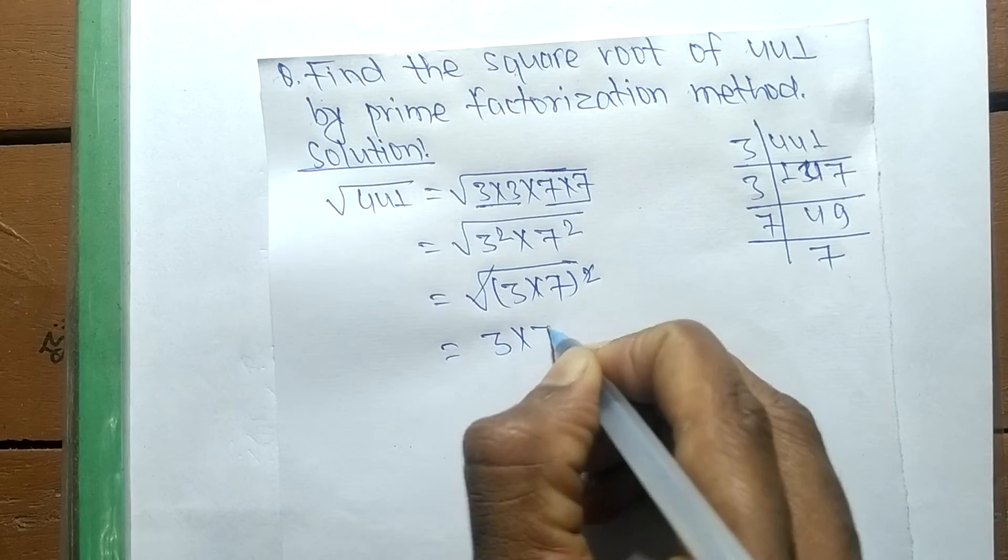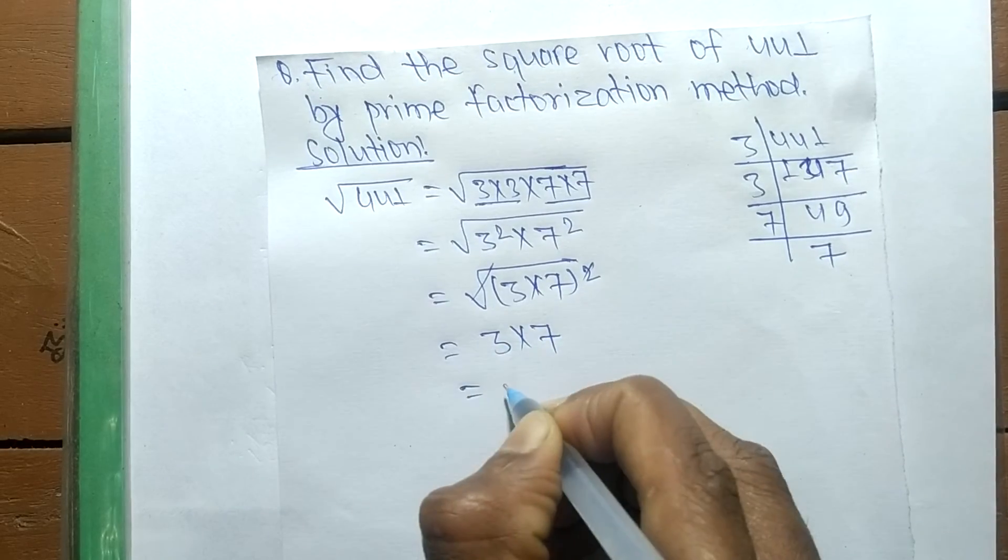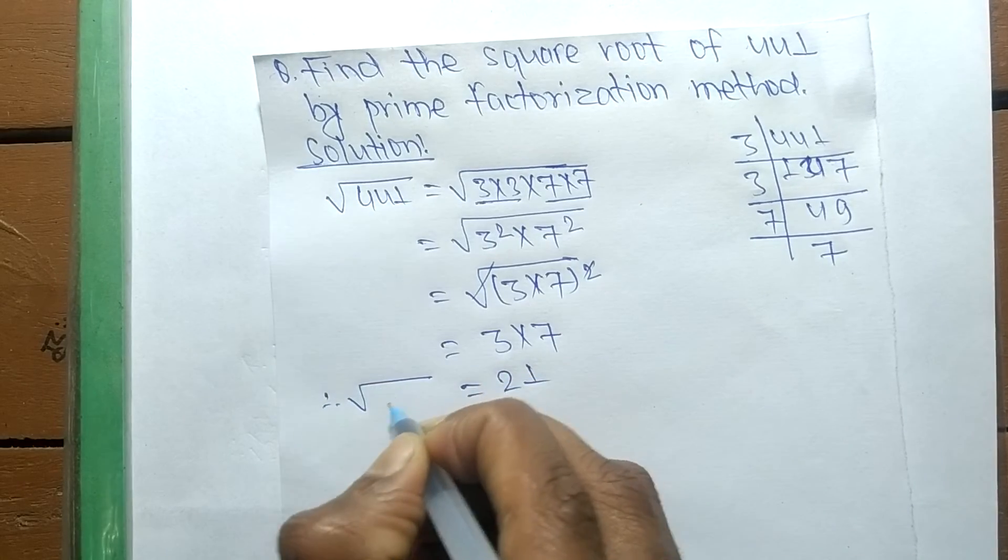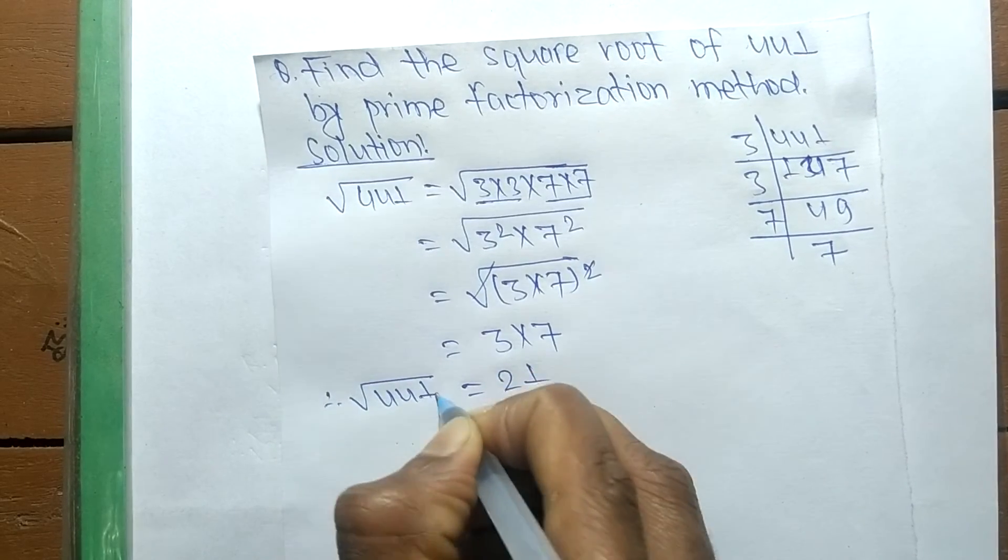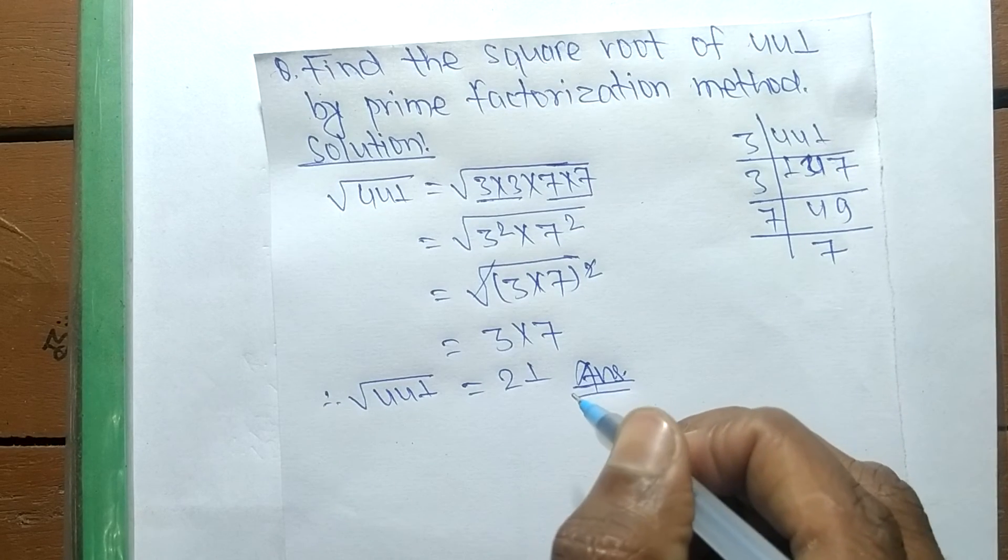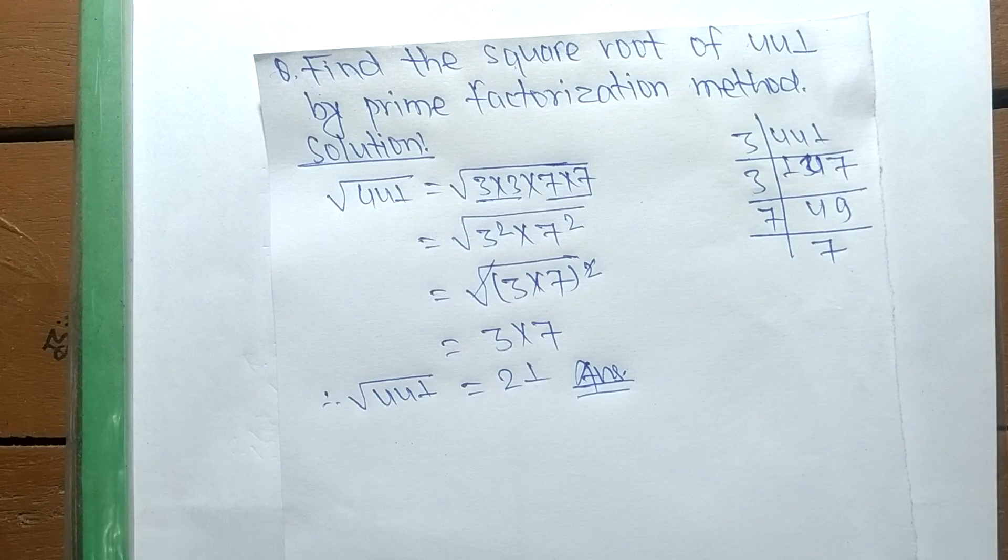So it is equal to 21. Therefore, the square root of 441 is equal to 21. This much for today, and thanks for watching.